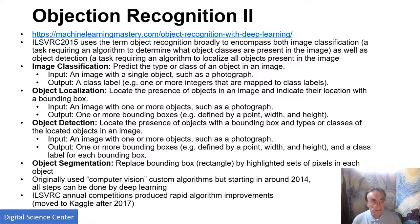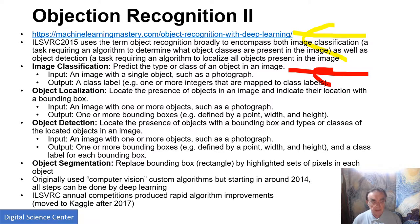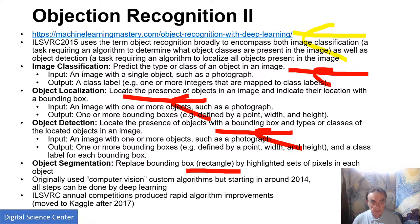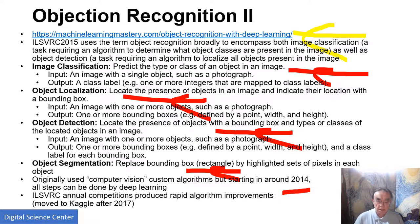Here is a more precise definition of some of these terms. We've taken the different parts of what we have to do: classifying the objects, localizing the objects in the image, bounding boxes, segmentation. Starting in 2014, everything is done by deep learning. Previously we had a whole set of custom algorithms which were brilliantly done and quite successful, but not as successful as deep learning, as seen by who wins these competitions.